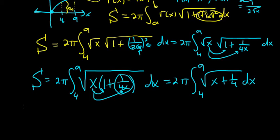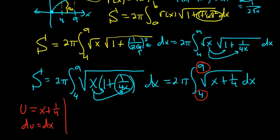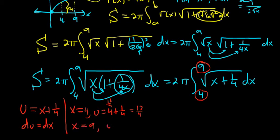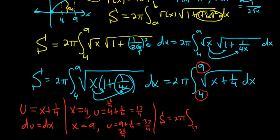We can make a u-substitution to integrate this. We let u equal whatever's in the square root: x plus 1/4. Then du equals dx. When we make a u-sub, we have to change the limits of integration. When x equals 4, u equals 4 plus 1/4 — think of 4 as 16/4, so 16/4 plus 1/4 equals 17/4. When x equals 9, u equals 9 plus 1/4 — think of 9 as 36/4, so 36/4 plus 1/4 equals 37/4. So S equals 2 pi, integral from 17/4 to 37/4, of u to the 1/2 du.